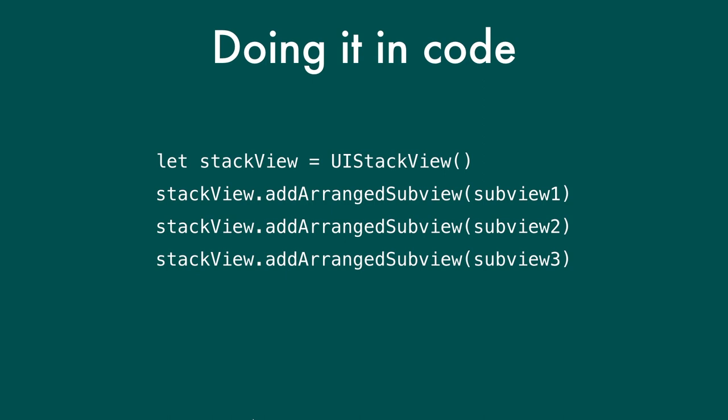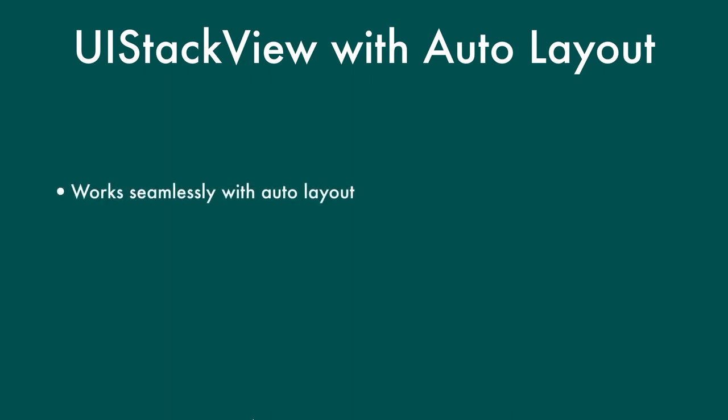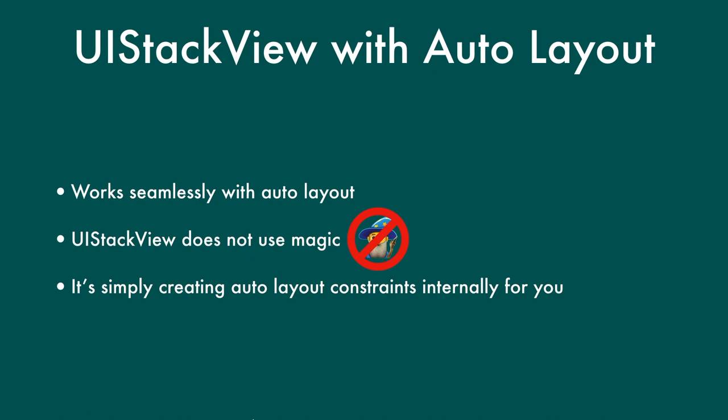I should talk about UI Stack View and how it works with auto layout, because I've been emphasizing that if you use stack views, you don't have to create auto layout constraints. You might be wondering how it works with your existing auto layout. The answer is it works seamlessly. Despite the fact that UI Stack View can do very magical things, it is not using literal magic — it is actually creating auto layout constraints internally on your behalf. That's how it does its own layout. These constraints aren't meant for you to look at or mess with, but everything is auto layout all the way down, so everything just works together.